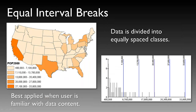The next type of classification method is what we call equal interval breaks. Equal interval classifications are methods that divide a set of attribute values into groups that contain equal ranges of values. In this case, you can see that our data is now divided with equally spaced classes in the bottom right, looking at the histogram. Our data distribution has changed substantially. It now appears that we have a number of low populated states, with our highest populations being in California, Texas, Florida, and New York. This method is best applied when the user is very familiar with the data content, and it's important to note that any one of these data techniques must be applied carefully so that the user truly understands the nature of the data.